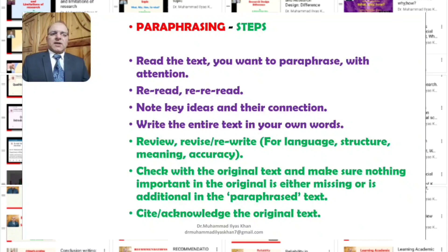Once this is done, we need to revise or rewrite for language, structure, meaning, and accuracy. In some cases, we might have made mistakes in interpreting ideas or in presenting ideas in correct language, or in terms of structure and grammar accuracy. So we need to revise and rewrite, often several times. Then we check with the original text, making sure nothing important in the original is either missing or is additional in the paraphrased text.